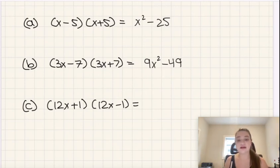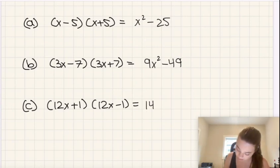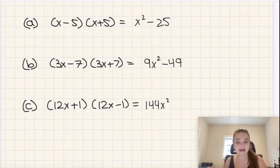And same with this last one here. 12x times 12x is 144x², and then 1 times -1 is -1. And the other terms, +12x and -12x, that we would have gotten from using the full FOIL method are just going to cancel each other out. Therefore, there's no point in writing them or considering them.